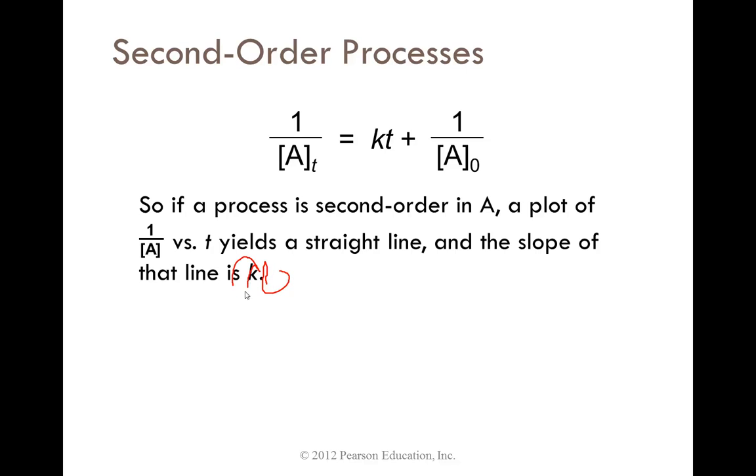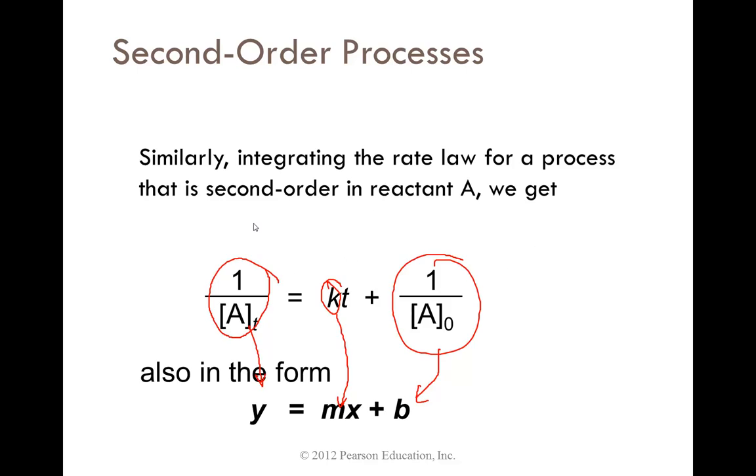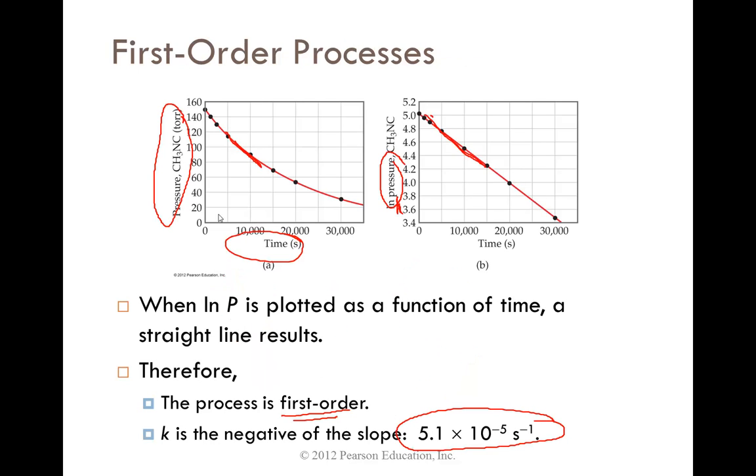Note that for first order it was negative k, whereas the second order is positive.